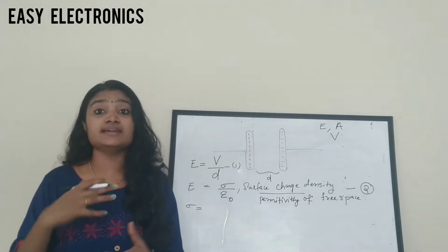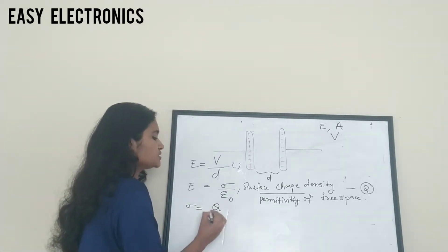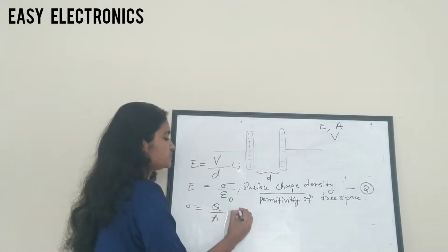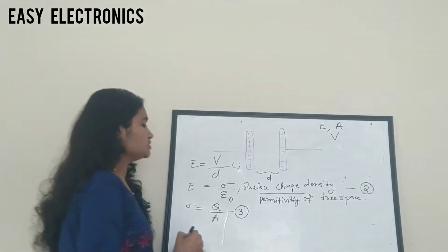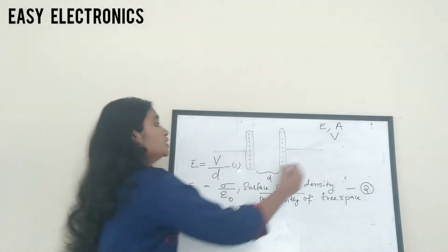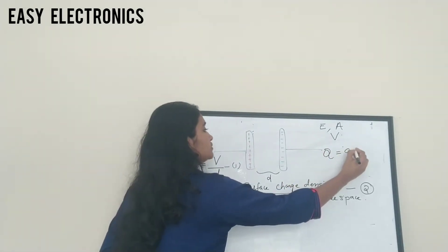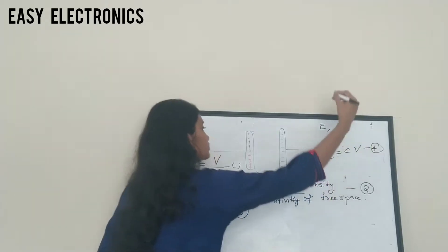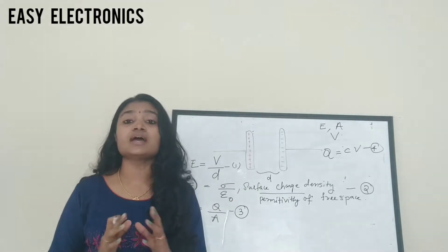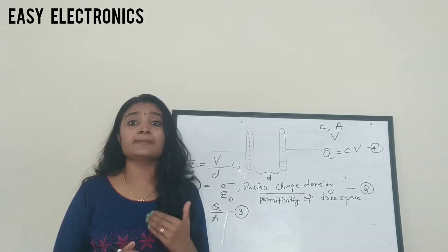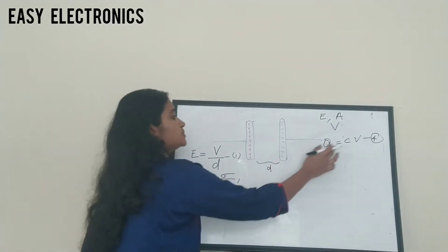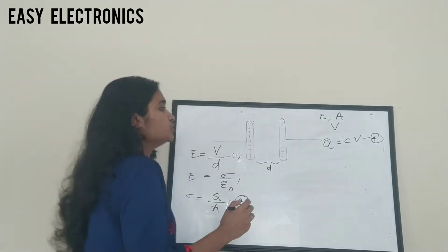The surface charge density σ can be written as total charge divided by area: σ = Q/A, where A is the area of the metal plates — call this equation 3. And you have the charge equation Q = CV — equation 4. Now we combine these four equations to get the general equation for the capacitor.